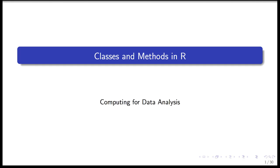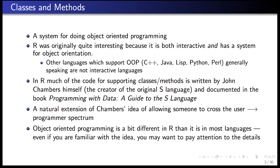This lecture is going to be about classes and methods in R. Classes and methods are a system for doing object-oriented programming in R. R was actually originally quite interesting and novel as a programming language because it was both structured as an interactive language but also had a system for doing object orientation.